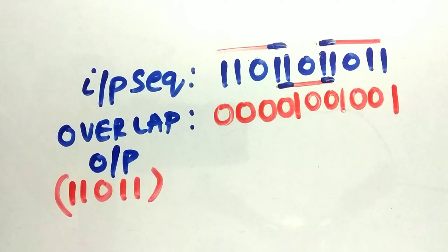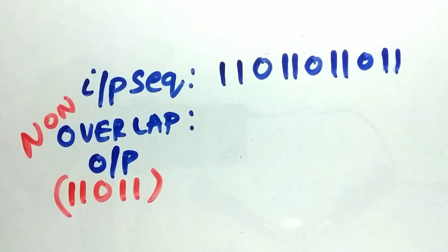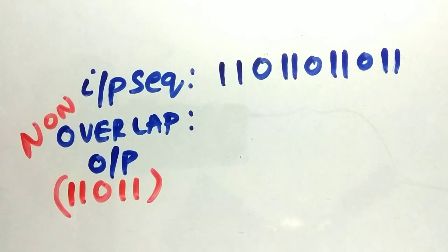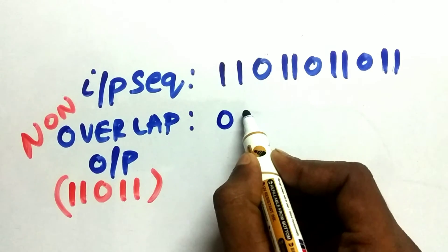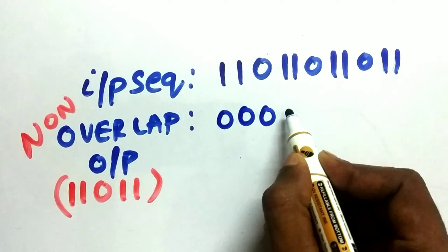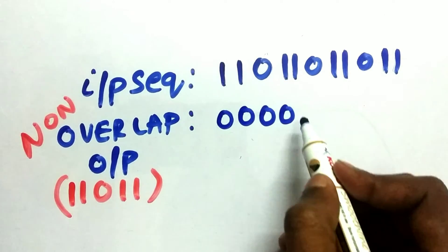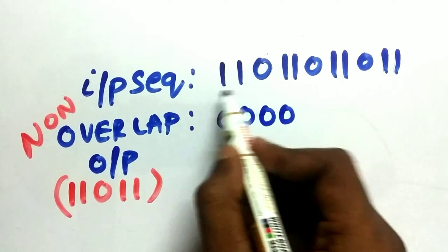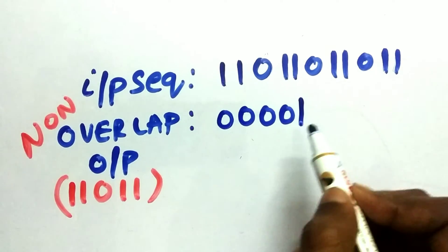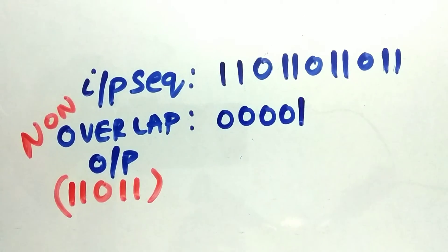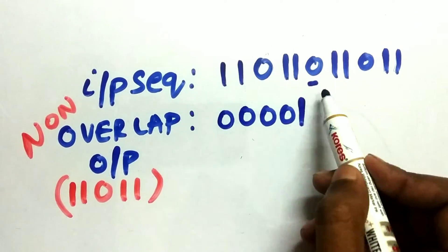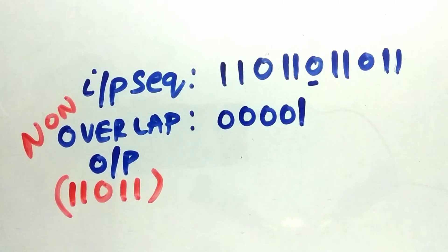Now let us look at the non-overlapped part. Non-overlap is straightforward — we cannot overlap. So the first bit output is 0, second bit output is 0, third bit output is 0, fourth bit output is 0. But at the fifth bit we got our pattern, so the output will be 1. We cannot use the previous bit — we need to continue from the new bit onwards. We cannot go back and check the pattern; it's non-overlapping.